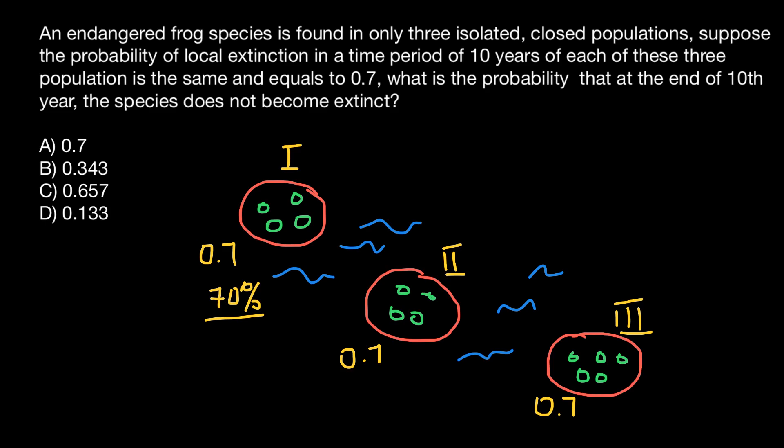Probability of extinction would be 0.7 or 70%. So now what are we going to do? We have to find what is the probability that species does not become extinct. But in order to make things easier, let's first find probability that they would go extinct.